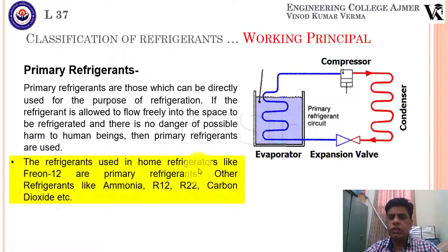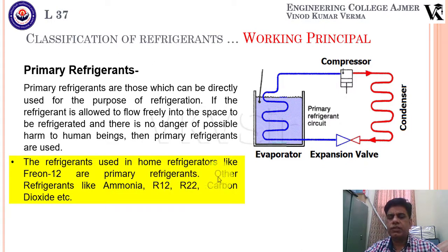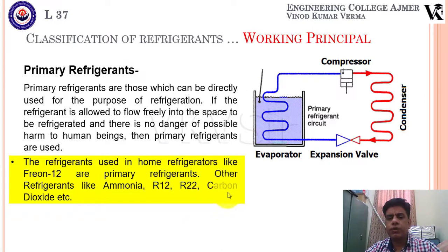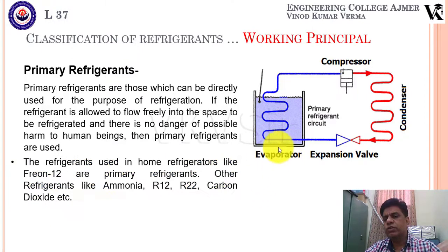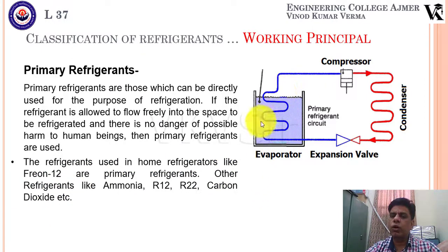Refrigerants used in home refrigerators like Freon-12 are primary refrigerants. Other examples include ammonia, R-12, R-22, and carbon dioxide. These are all used as primary refrigerants.